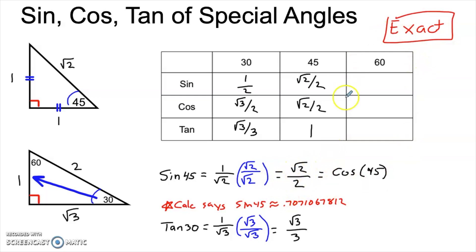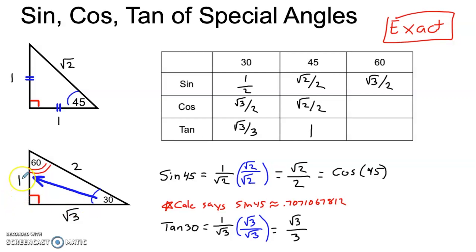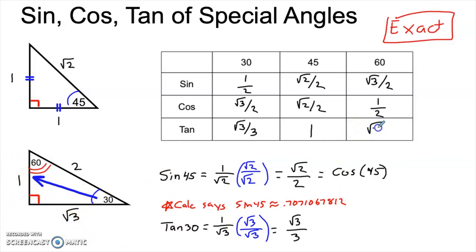Now let's bring our attention to the angle 60. For the sine, we need opposite over hypotenuse: that's the square root of 3 over 2. For the cosine, we need adjacent over hypotenuse: that's 1 over 2, or one half. And for the tangent of 60, we need opposite divided by adjacent: that's the square root of 3 divided by 1, or simply the square root of 3.